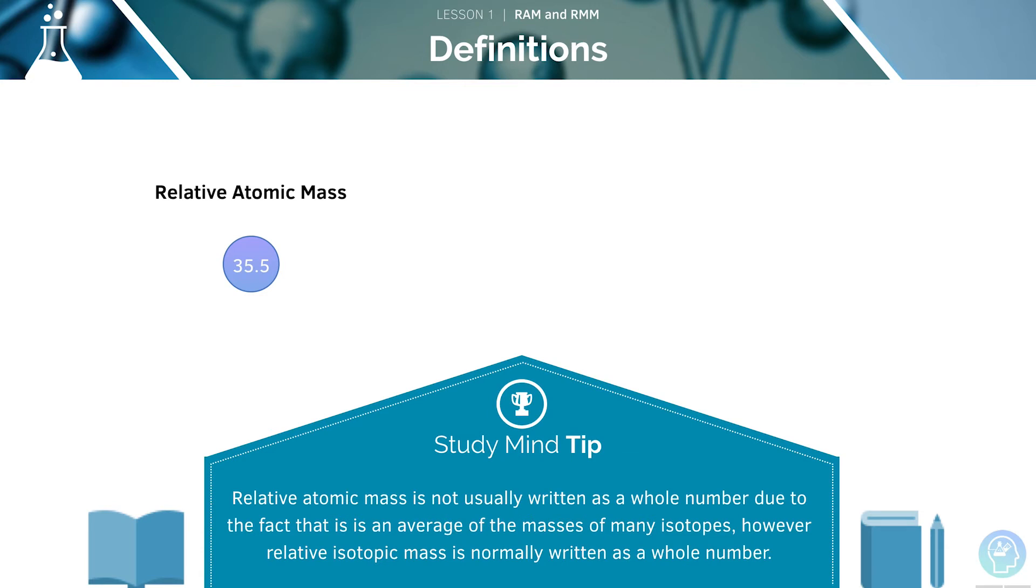Relative atomic mass is not usually written as a whole number due to the fact that it is an average of the masses of many isotopes. However, relative isotopic abundance is normally written as a whole number. Here, we can see the difference between the relative atomic mass and the relative isotopic mass.